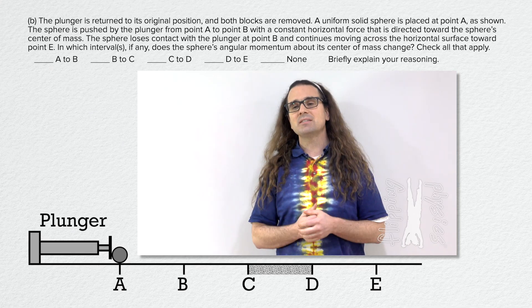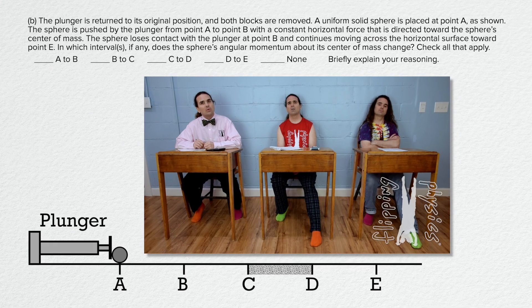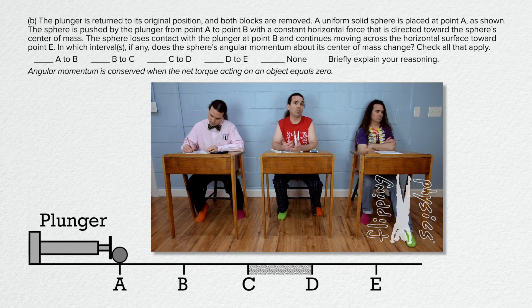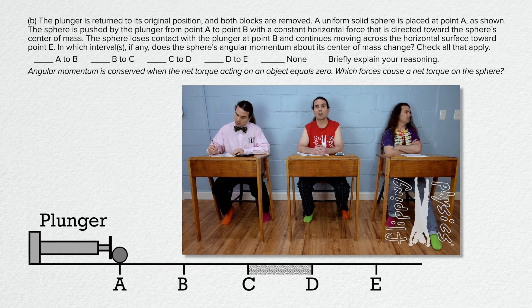Thank you, Bo. Bobby, please answer part B. Well, we know angular momentum is conserved when the net torque acting on an object equals zero. So, let's look at all the forces acting on the sphere and see if they cause a net torque on the sphere.